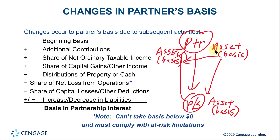When we exchange assets — like real estate — for a partnership interest, this basis carries over; it's called a substitute basis. That's the initial basis we're working with. And then if the partner makes additional contributions into the partnership, that's going to be added to the partner's basis.